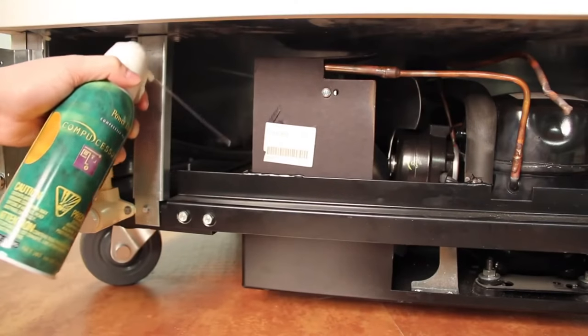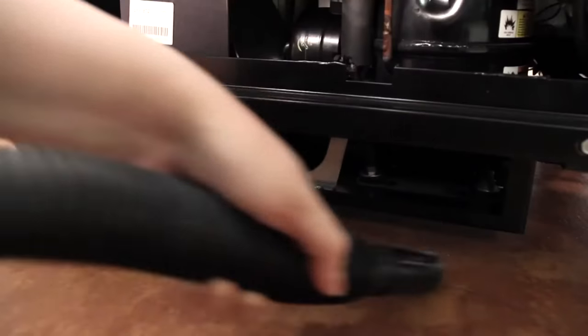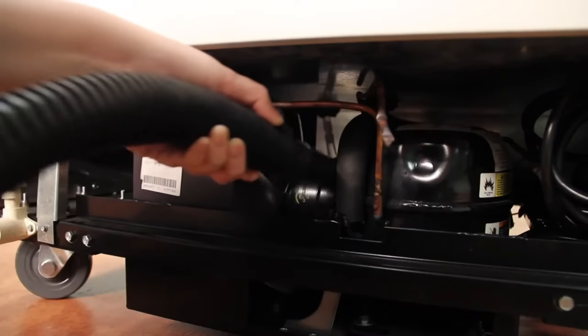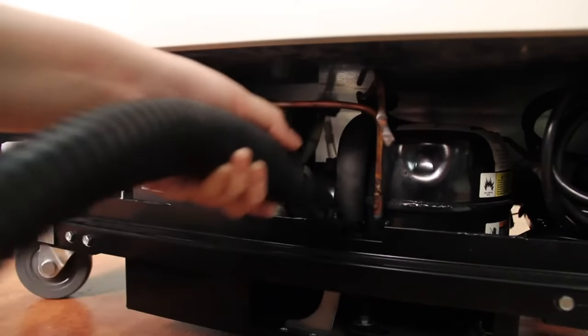You may use compressed air or CO2 to clean the condenser as well. Just remember to vacuum the dirt off the floor and the back side of the condenser to prevent it from being sucked back up into the coil.